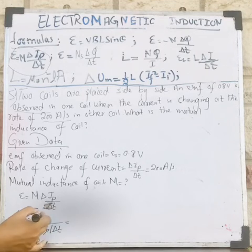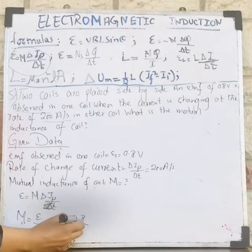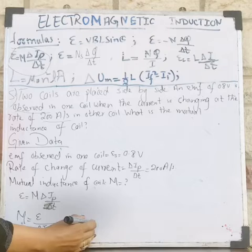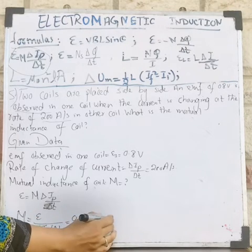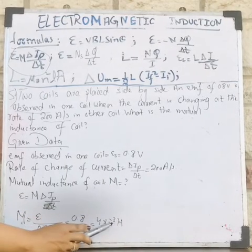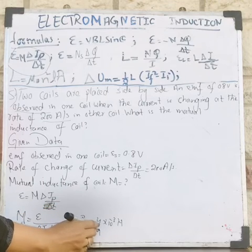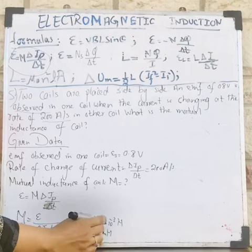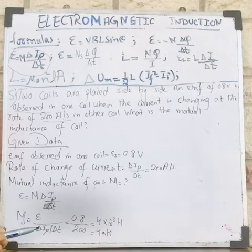Now let's put in the values. Epsilon is 0.8V and the rate of change of current is 200 A/s. After calculation, I get 4 × 10⁻³ henry. The unit of mutual inductance is henry, represented with capital H. This is also equal to 4 millihenry, since 10⁻³ equals milli. That is the value of mutual inductance.